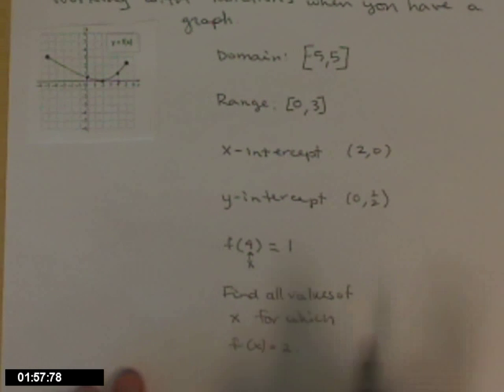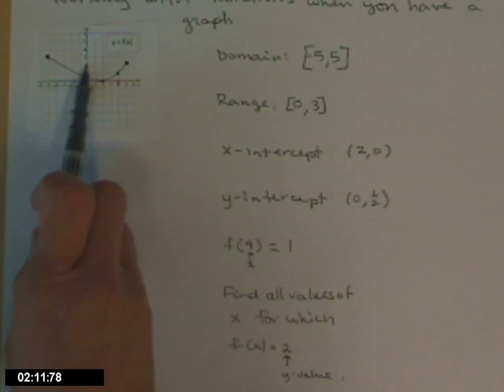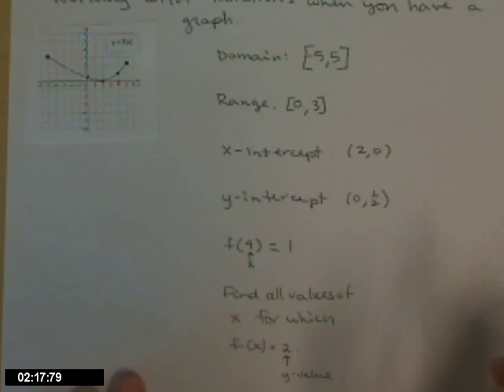Versus that last question, find all values of x for which f of x equals 2. This 2 is a y value. So now on my graph, I need to go to where y equals 2. Get on the graph, so I can get on over here, and read off that x value, which is an x value of 5.